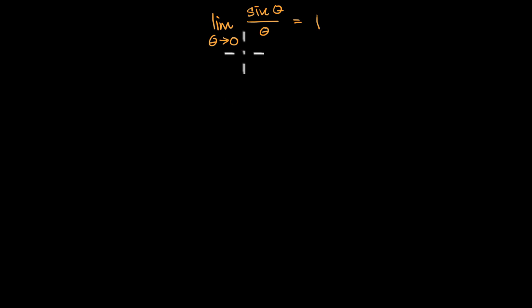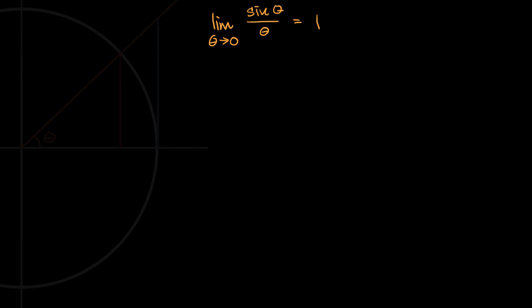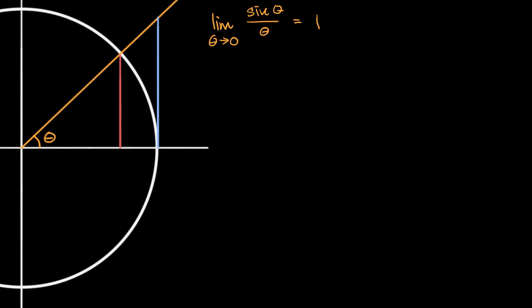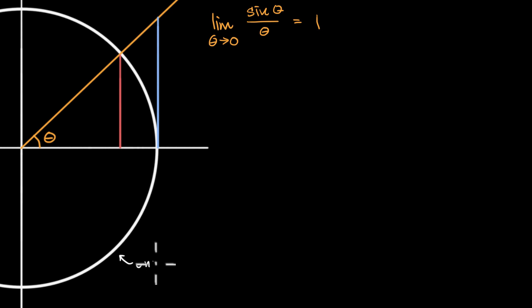Let's start with a little bit of a geometric or trigonometric construction. This white circle is a unit circle — it has radius one.